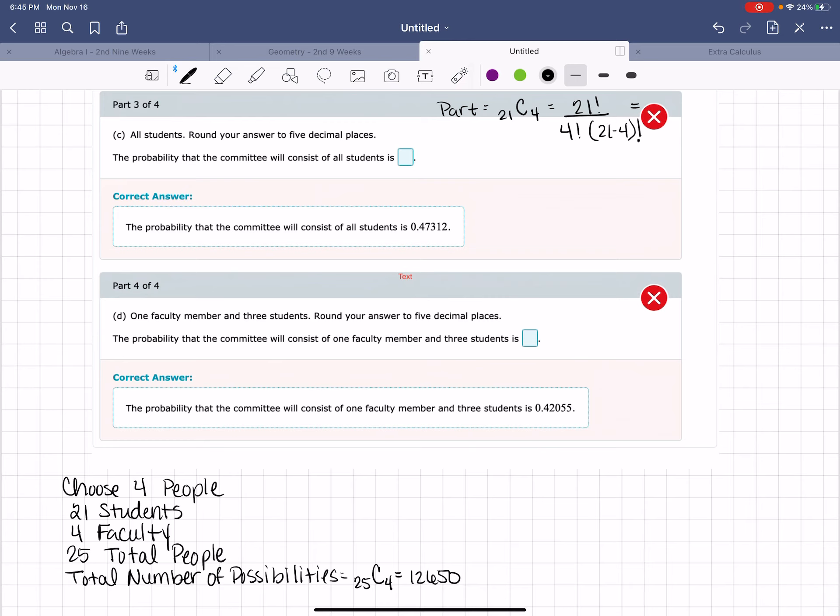That's going to give me 21 factorial over 4 factorial times 17 factorial. This leaves me with 21 times 20 times 19 times 18 all over 4 times 3 times 2 times 1.